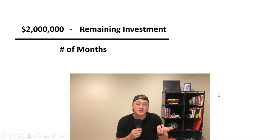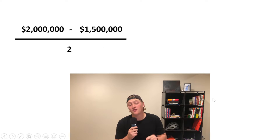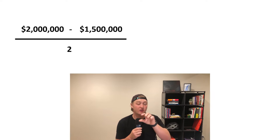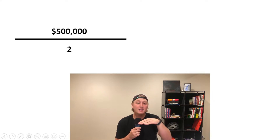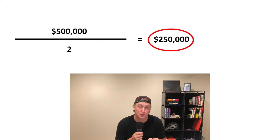So let's say we have a startup and we sell a product, and we were able to secure $2 million from a venture capitalist firm. After two months, we have $1.5 million of that left. So we would take the $2 million, subtract $1,500,000 to get $500,000, then divide that by two months, and we would get a burn rate of $250,000 per month.